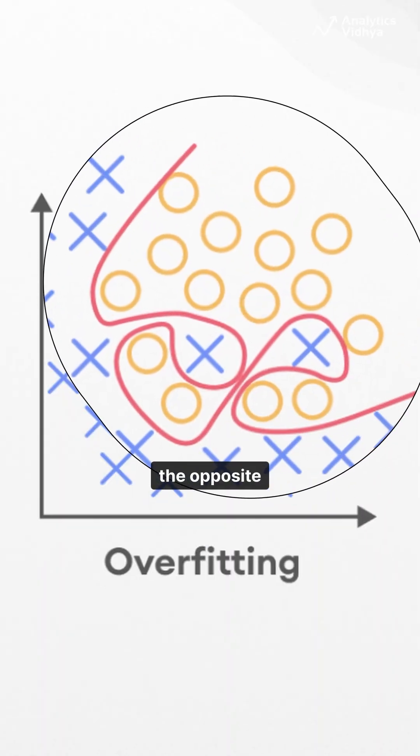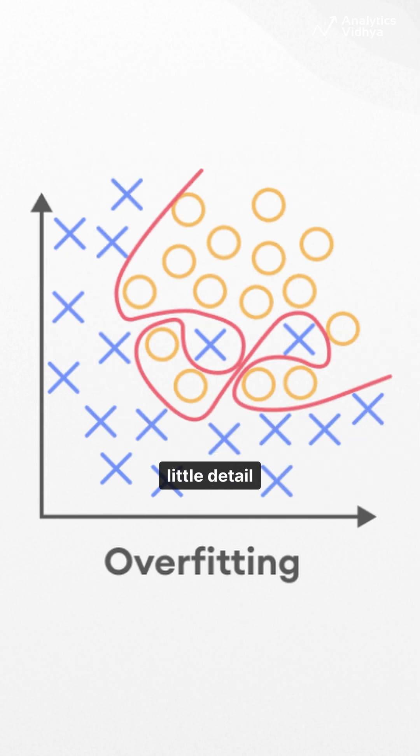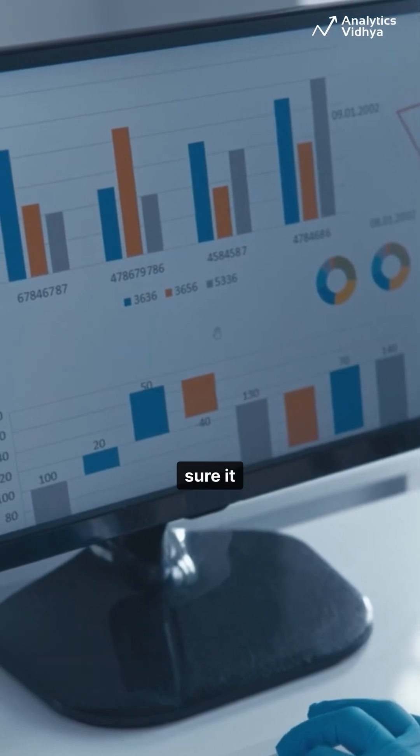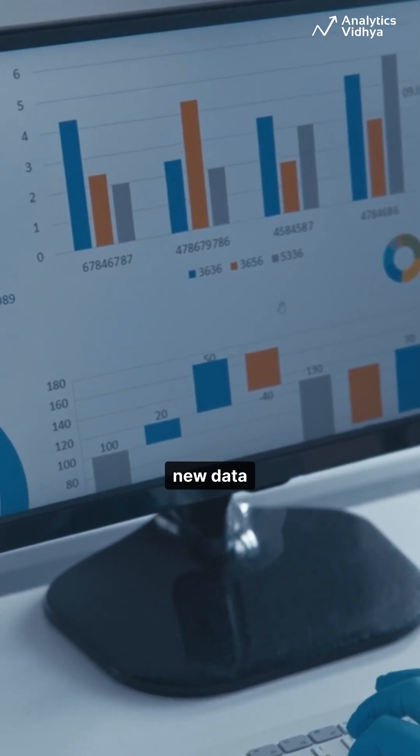Overfitting is the opposite. It happens when your model is too complicated, memorizing every little detail, even the random noise. Sure, it looks perfect on training data, but when you test it on new data, it flops.